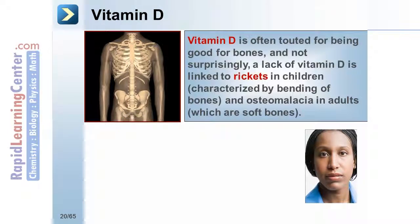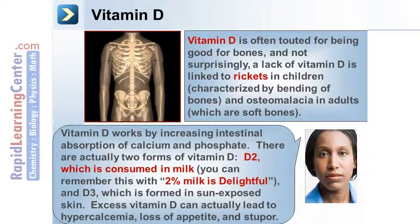Vitamin D is often touted for being good for bones. A lack of vitamin D is linked to rickets in children, characterized by bending of bones, and osteomalacia in adults, which are soft bones. Vitamin D works by increasing intestinal absorption of calcium and phosphate. There are two forms: D2, consumed in milk (remembered with 2% milk), and D3, which is formed in sun-exposed skin. Excess vitamin D can lead to hypercalcemia, loss of appetite, and stupor.